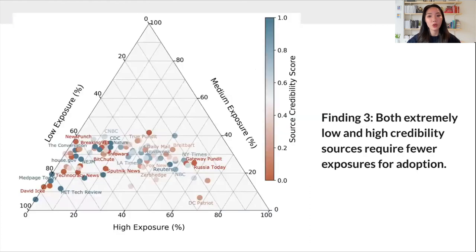Interestingly, we also find that sources of both extremes of credibility, very low and very high, are adopted more rapidly than those of moderate credibility. This pattern highlights a polarized response. Some users easily fall prey to fringe beliefs, while others highly value accuracy and reliability.